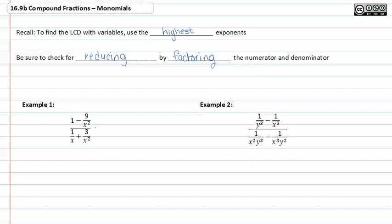Let's take example one and decide what we need to use as the LCD. We see that one does not have a numerator or a denominator other than one, but negative nine over x squared has an x squared in the denominator of the numerator. This gets a little confusing when we're trying to simplify a fraction that's compound, or has fractions in the numerator and the denominator.